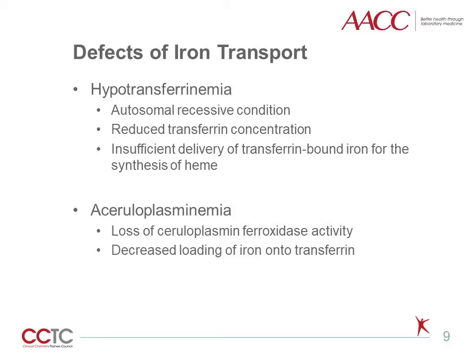Last but not least, we will talk about the third class of iron overload, which is caused by defects of iron transport. Hypotransferrinemia is a rare autosomal recessive condition where functional transferrin concentrations are severely reduced. Iron overload in this condition is caused by insufficient delivery of transferrin-bound iron for the synthesis of heme, and therefore increased iron storage in tissues. Another disease that causes defective iron transport is called aceruloplasminemia. In these patients, loss of aceruloplasmin ferroxidase activity decreases loading of iron onto transferrin, which leads to increased iron storage in cells.